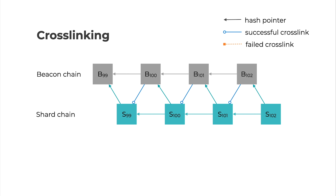If a beacon block is finalized, then the shard block that the beacon state referenced is also finalized. And if the shard block is invalid and the beacon chain somehow included it, then the beacon chain is also considered invalid.